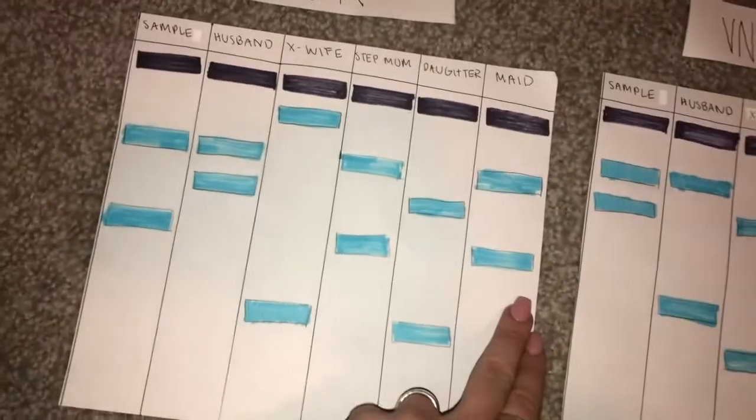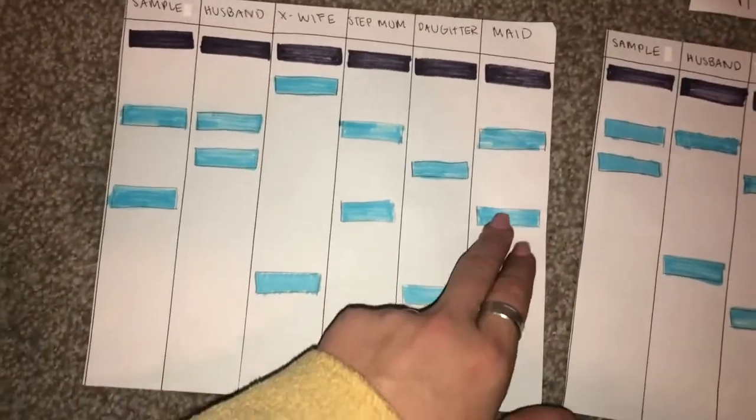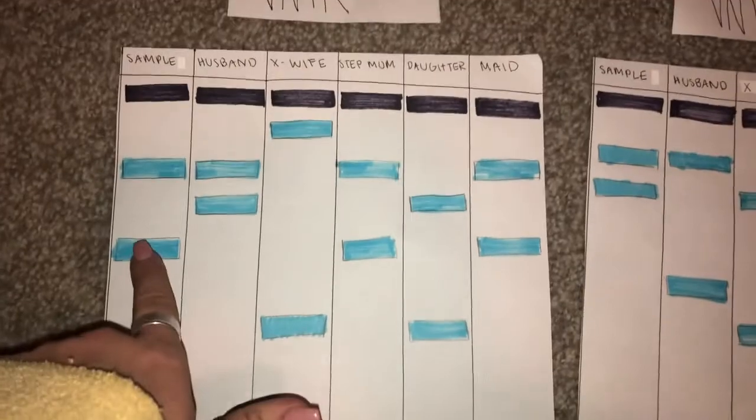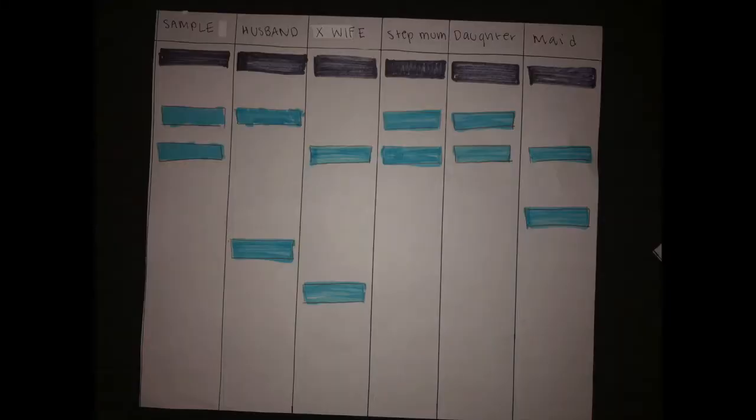Lastly we can look at the maid, who does fully match at VNTR 1. We'll see if she matches at VNTR 2, but she only has 50% DNA matching the sample.